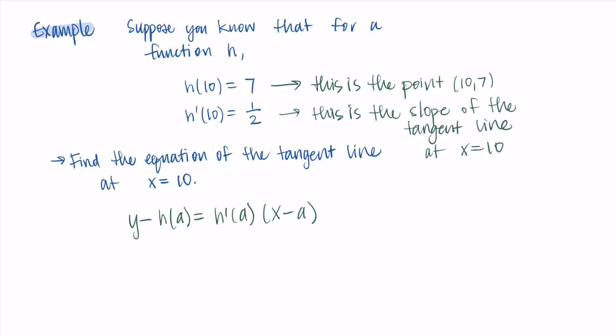So we have a is 10, so that means we'll have y - h(10) = h'(10)(x - 10). And we have some of this information given to us in the problem, so h(10) is 7 and h'(10) is 1/2.